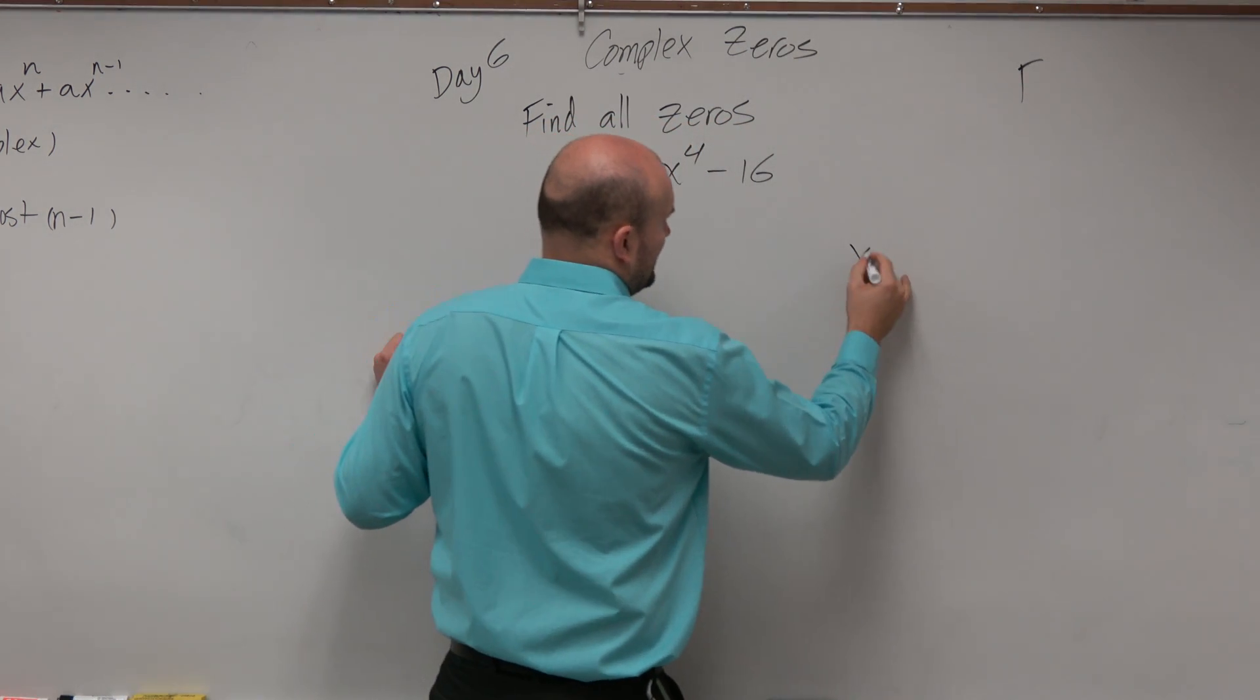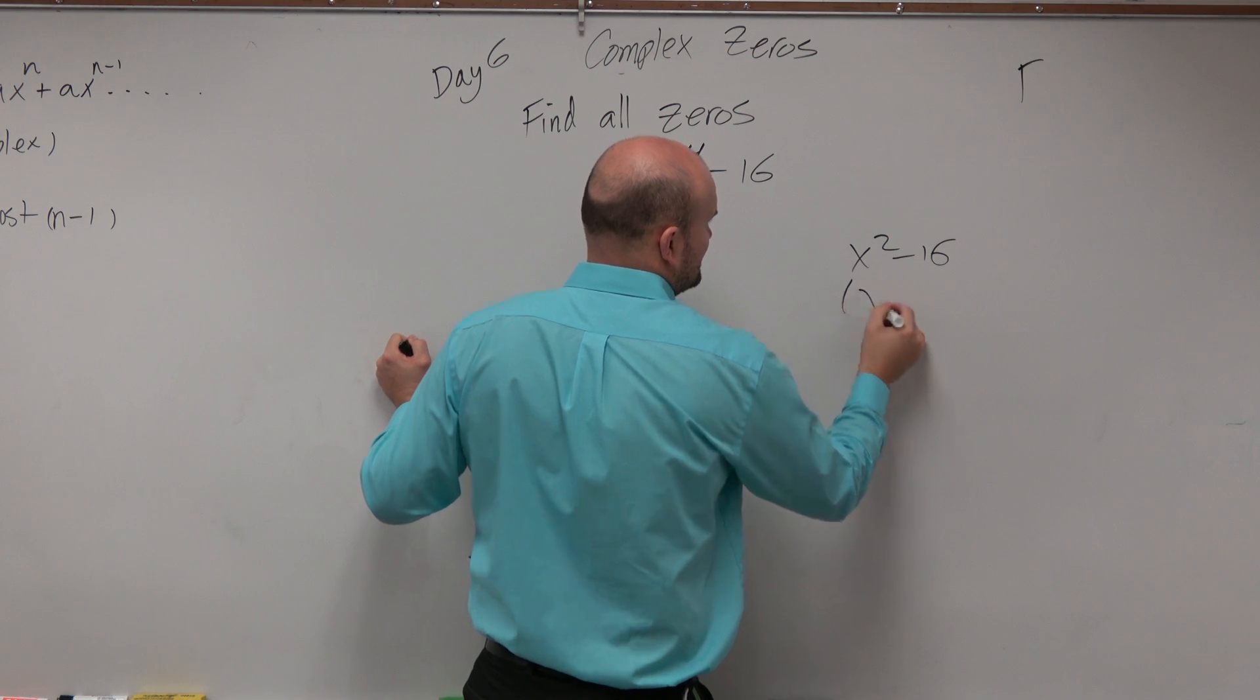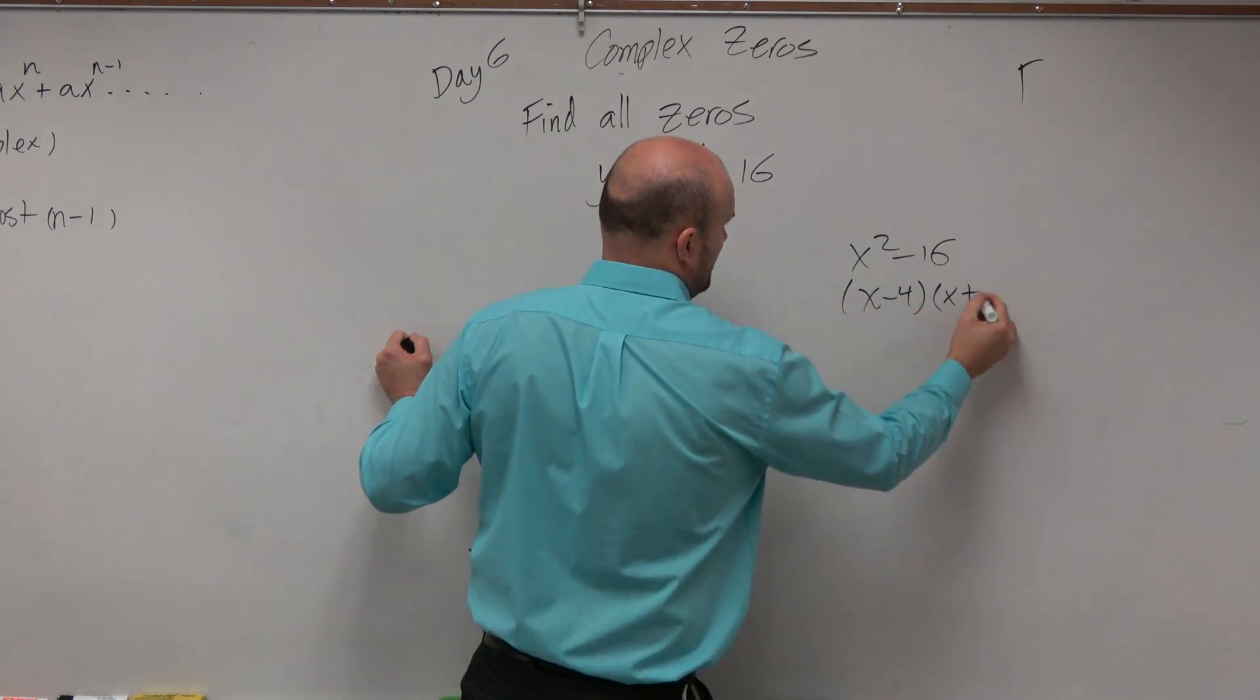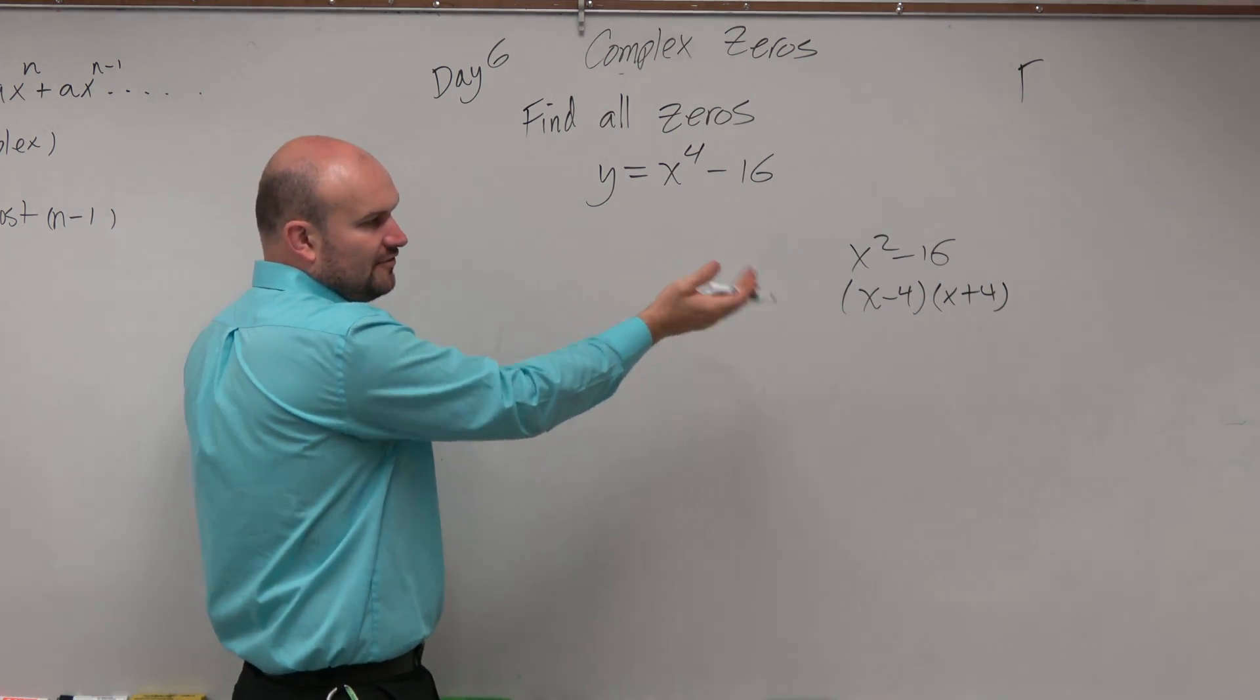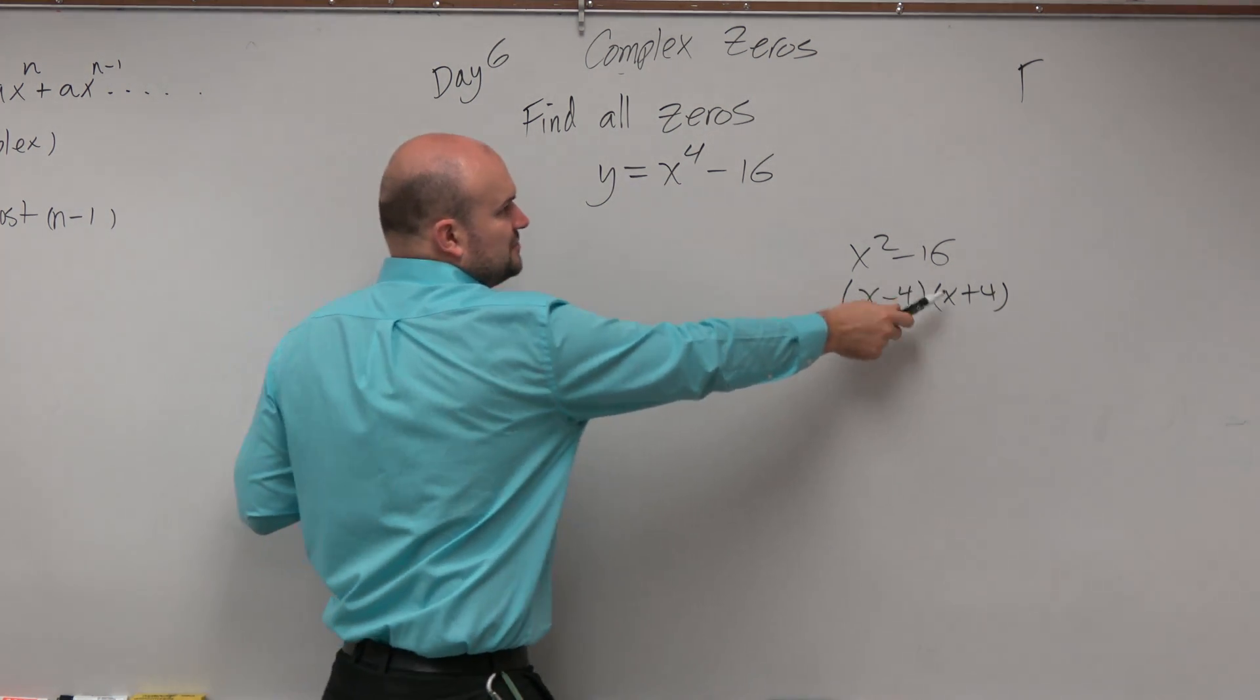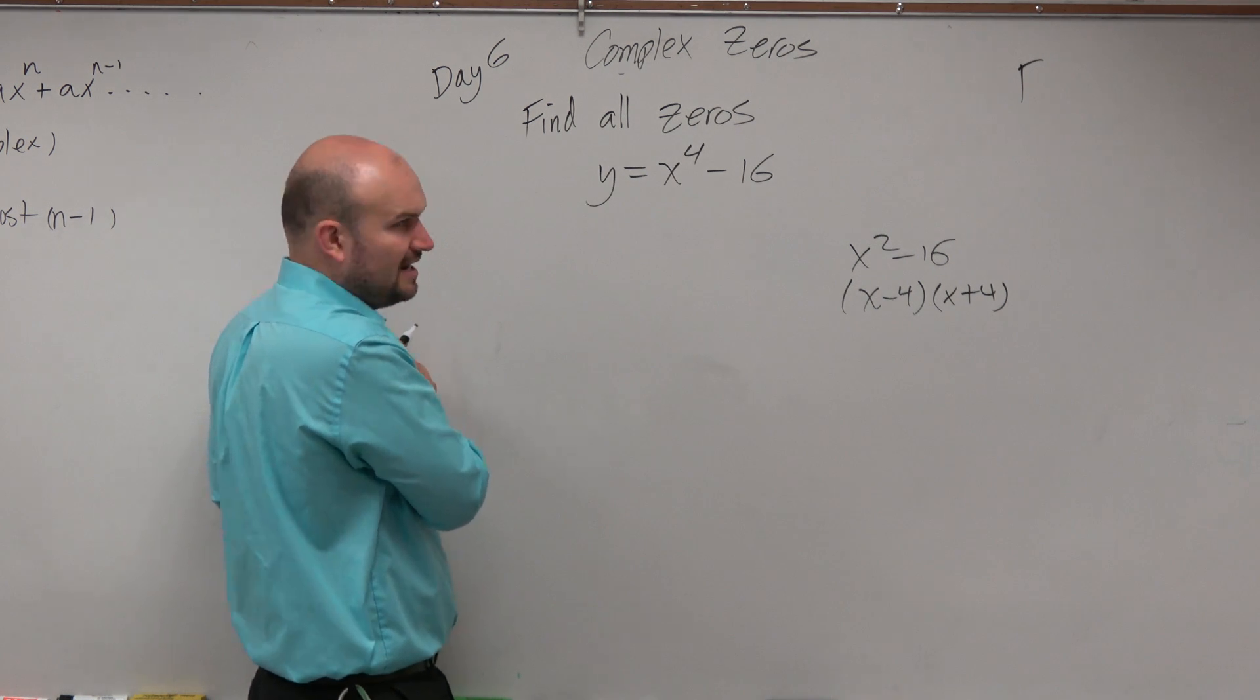Hopefully you guys feel fairly comfortable with x squared minus 16 is x minus 4 times x plus 4. So we still need to get 16. So we know our product is going to be negative 4 and 4. But our first two terms have to give us x to the fourth now, not x squared.